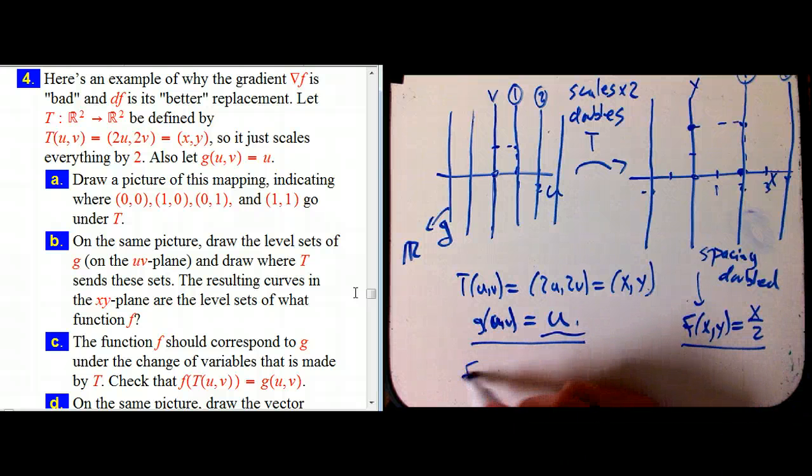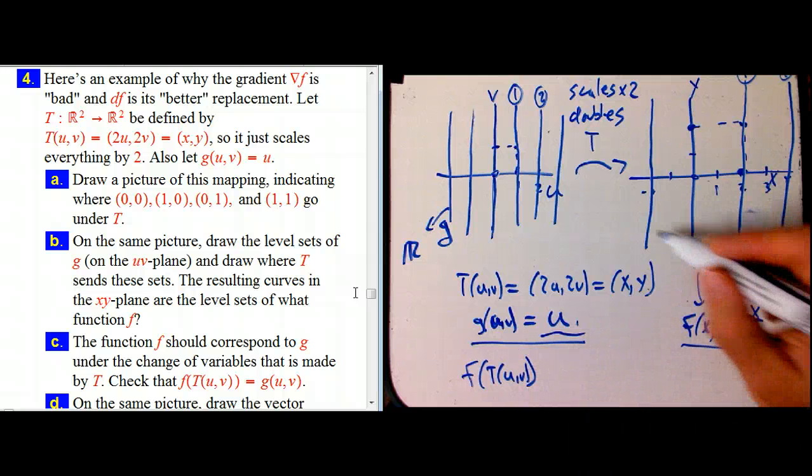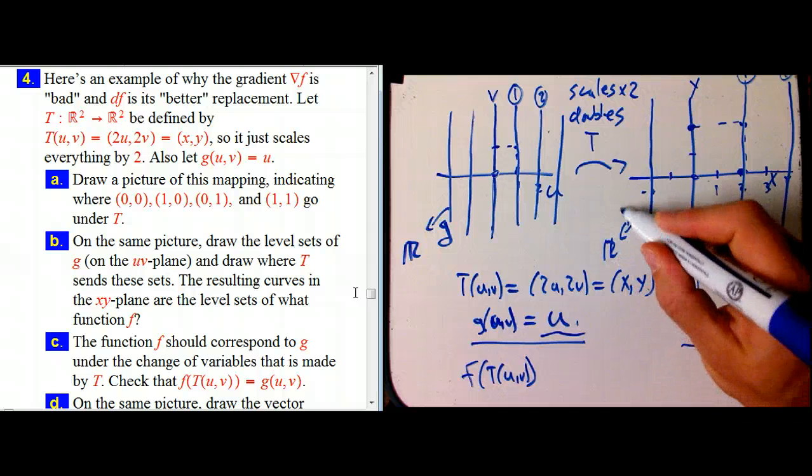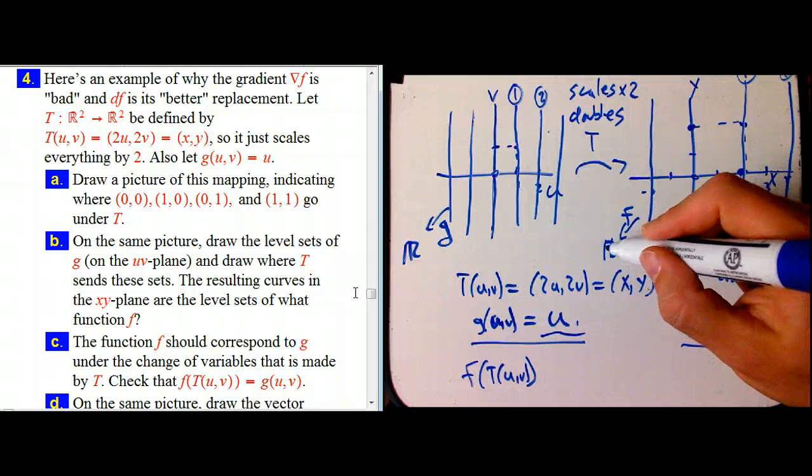And indeed, f of t of u, v, that's the kind of thing we can do. There's this function f to R here. So if I start here and I go over to here and then go to the real numbers with f, that gives me a function to R.